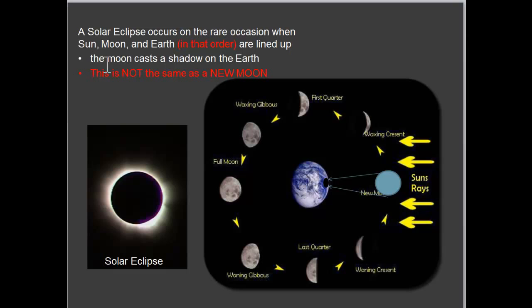So here, it reads, a solar eclipse occurs on a rare occasion when sun, moon, and earth in that order are lined up. The moon casts a shadow on the earth. So here's another diagram of the phases of the moon. And here's my moon. Here's the sun, of course, starting from the right.